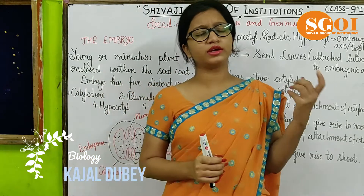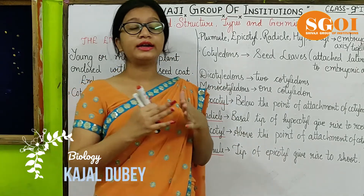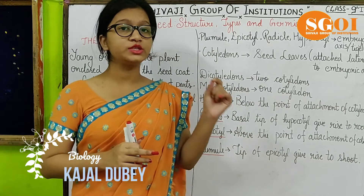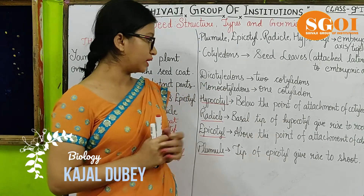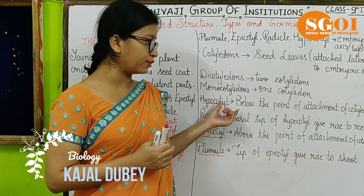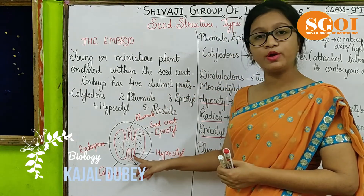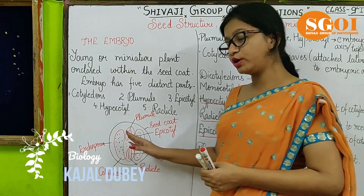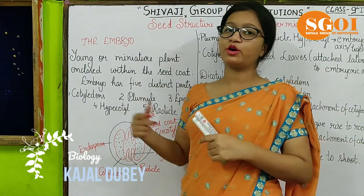Cotyledons are of two types, and based on this seeds are classified: first, dicot seed — a seed where there are two cotyledons present; second, monocot seed — where there is one cotyledon present. For the four parts of the embryonic axis: hypocotyl is below the point of attachment of the cotyledon, radicle is at the base, epicotyl is above the point of attachment, and plumule is at the tip of the embryonic axis.